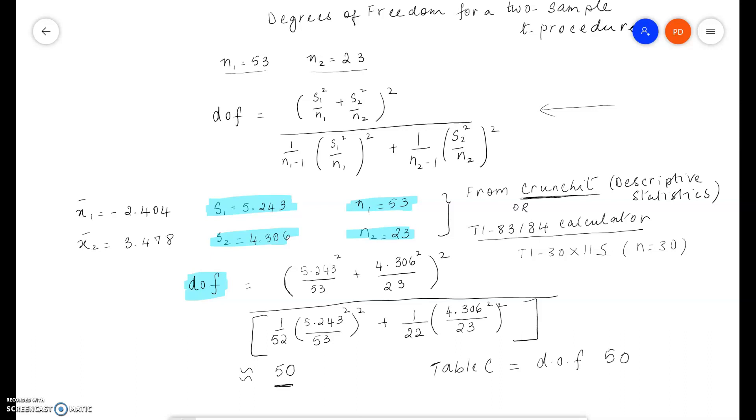Now suppose the formula gave you, let's say, 76 degrees of freedom. If you click on the table, you'll notice that the degrees of freedom are either 40, 50, 60, or 80. Go to the lower number, which is 60 degrees of freedom. That is the safer option, and use the numbers related to degrees of freedom 60.